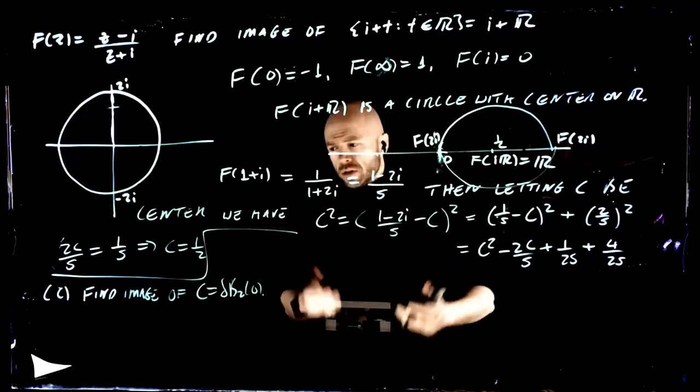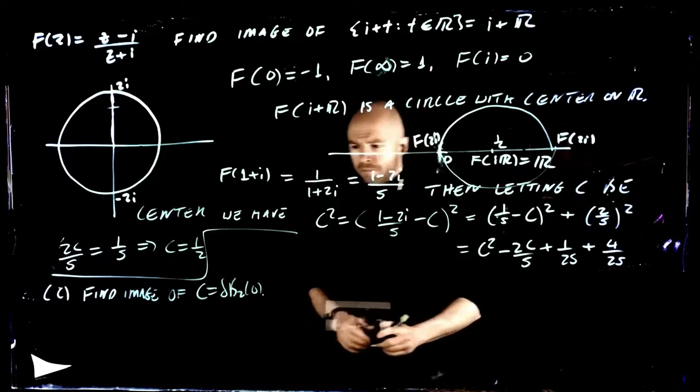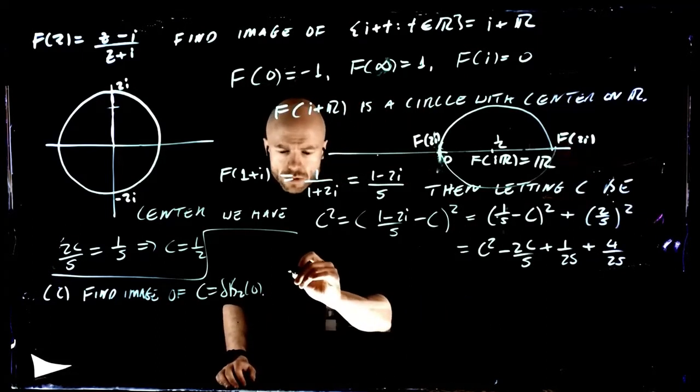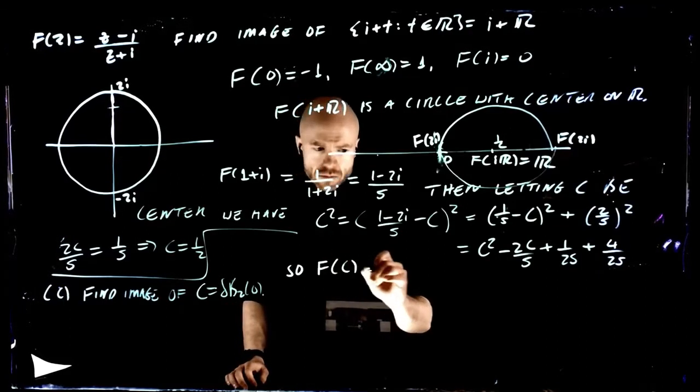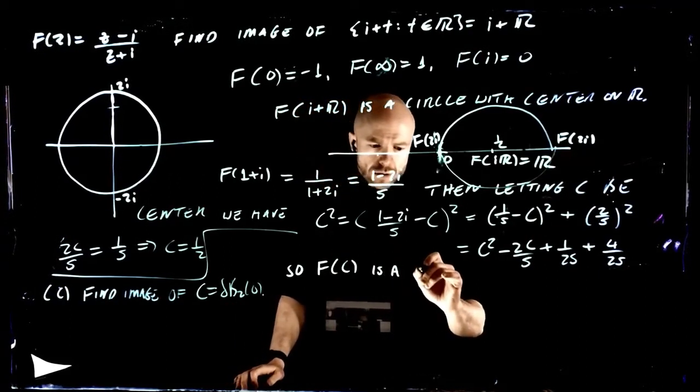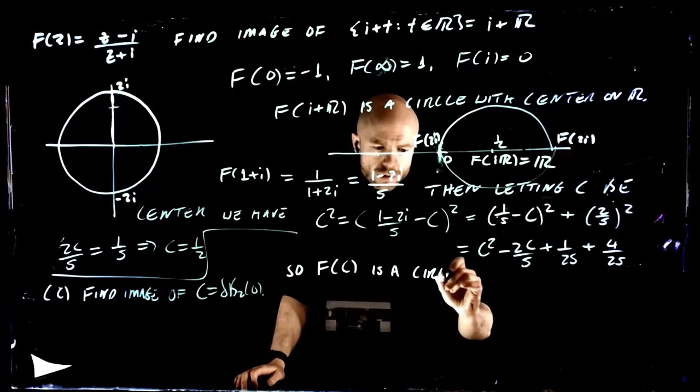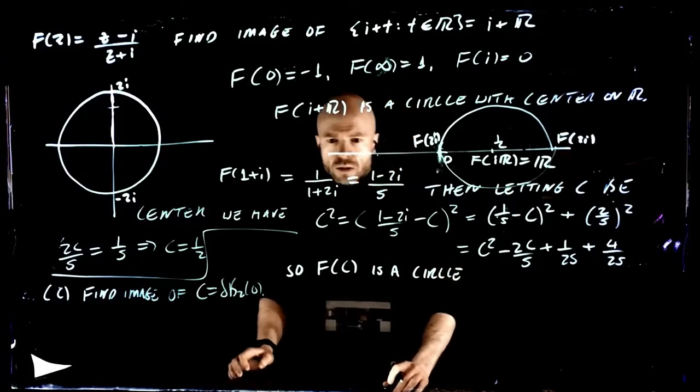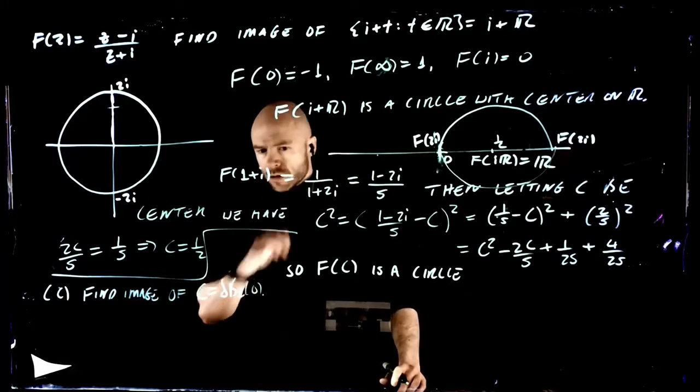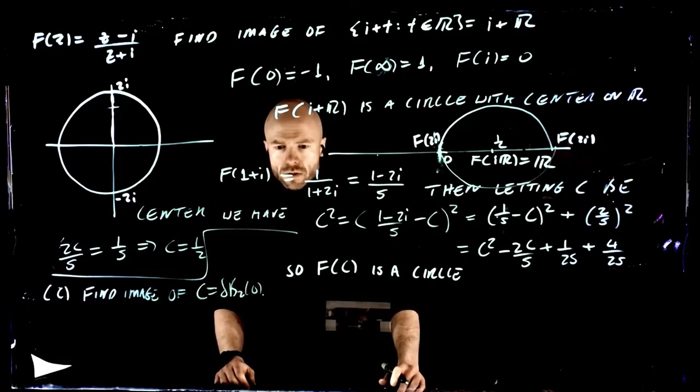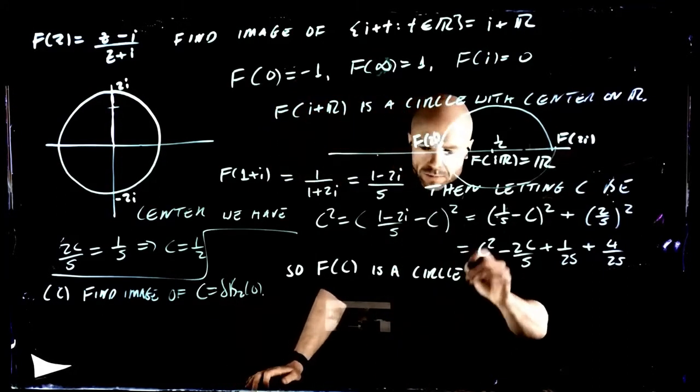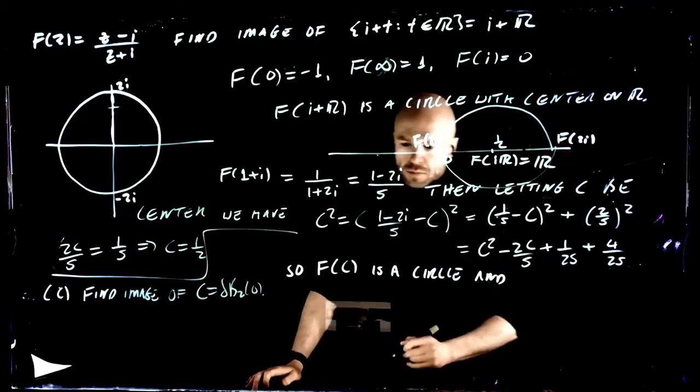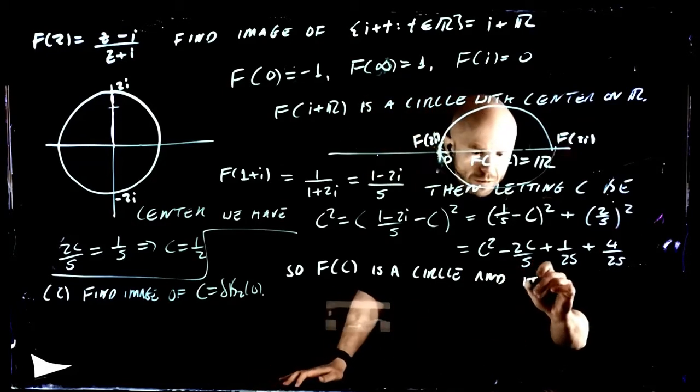That means that, well, what's the consequences of that? Halfway in between them is the center and the center is on the real line too. So this is a circle and its center is on the real line.